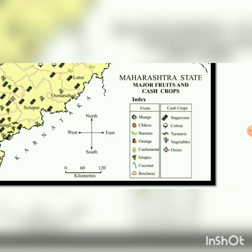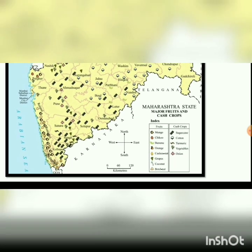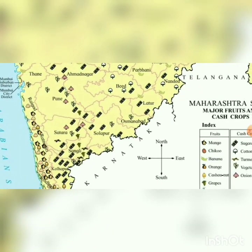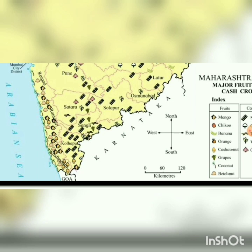The cash crops shown include sugarcane, cotton, turmeric, vegetables, and onion, along with fruits such as mango, chikku, banana, orange, cashew nut, grapes, coconut, and betel nut. Looking at the Konkan coastal region, you can see coconut trees are prominent. The coastal region also grows betel nut, mango, and cashew nuts.